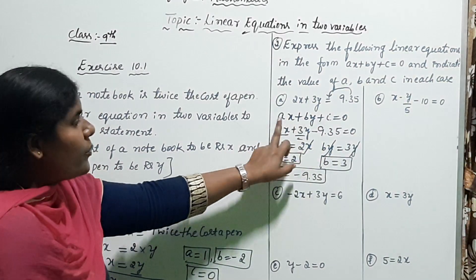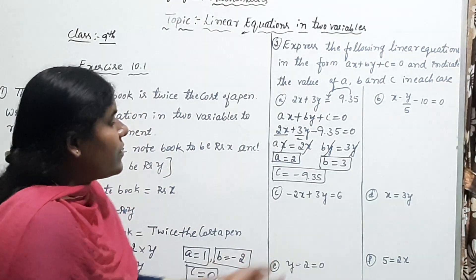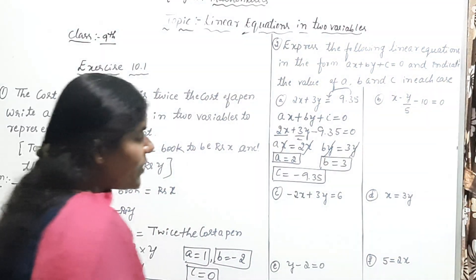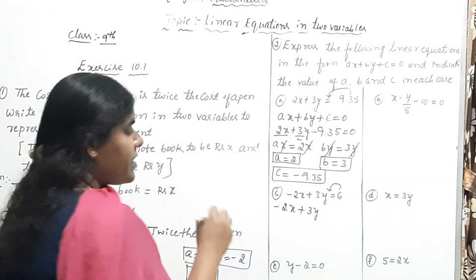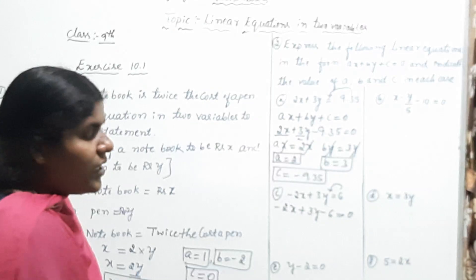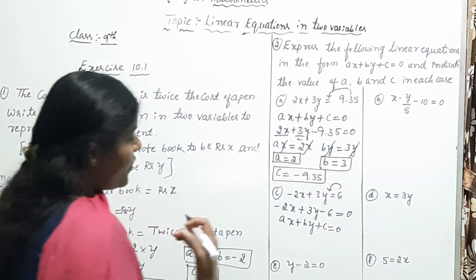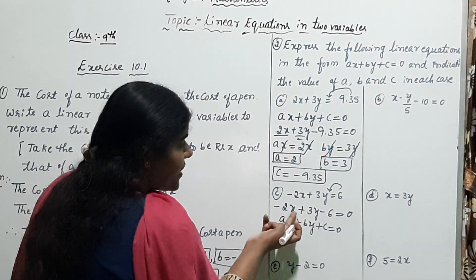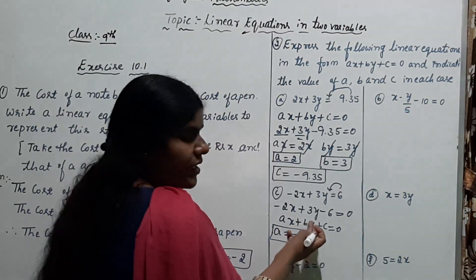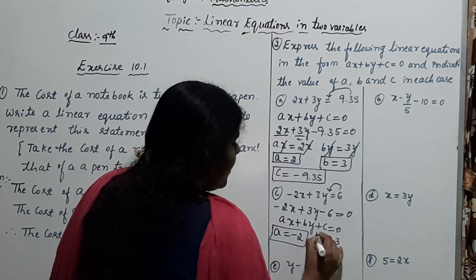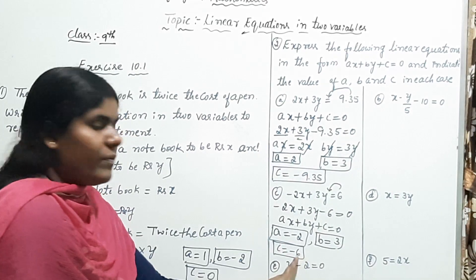The next problem is −2x + 3y = 6. Transfer 6 to the left-hand side: −2x + 3y − 6 = 0. Comparing with the standard form AX + BY + C = 0: A = −2 (coefficient of x), B = 3 (coefficient of y), and C = −6.